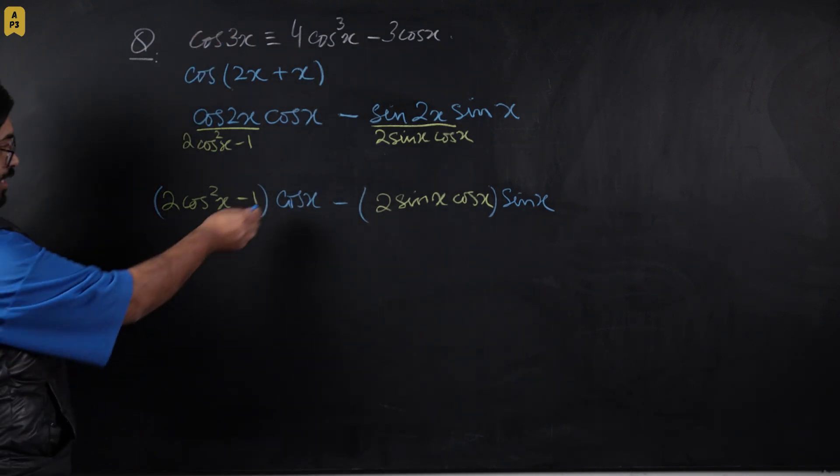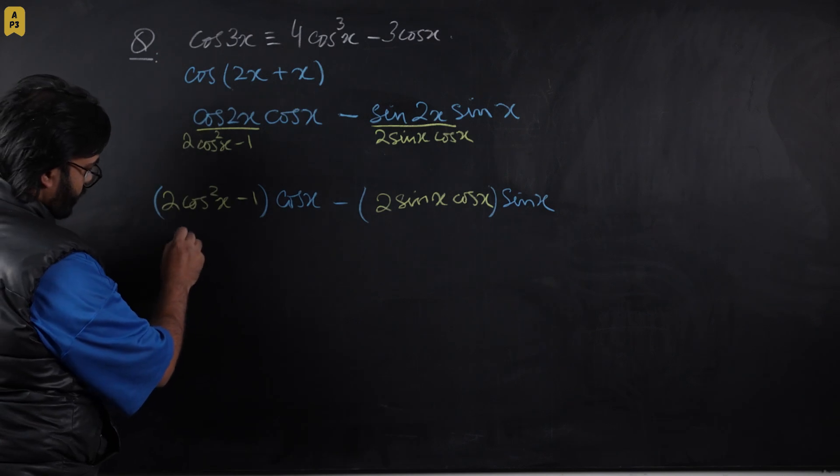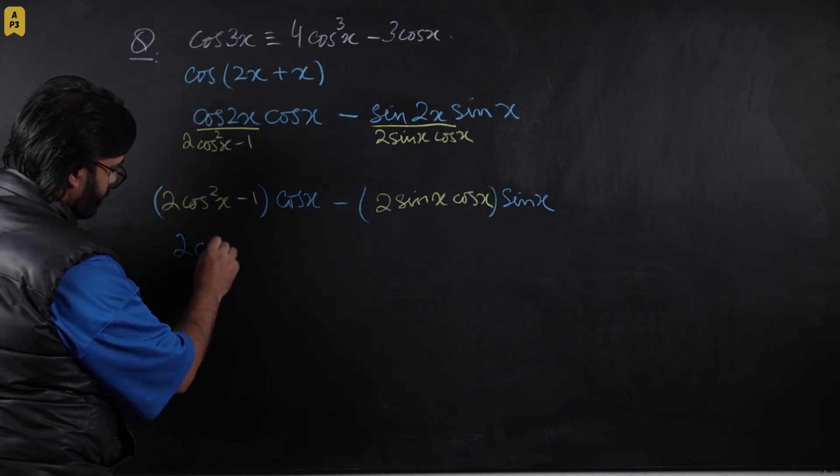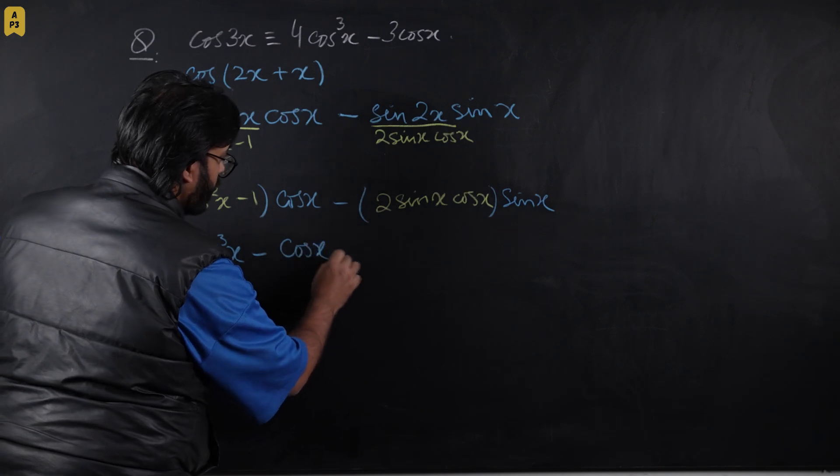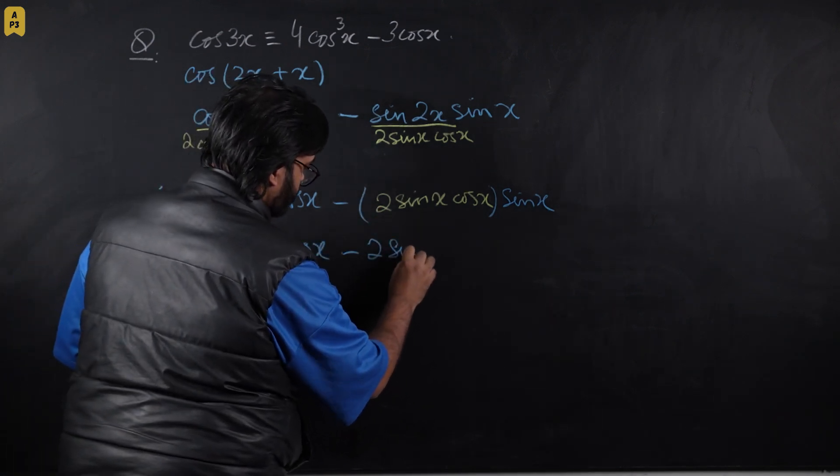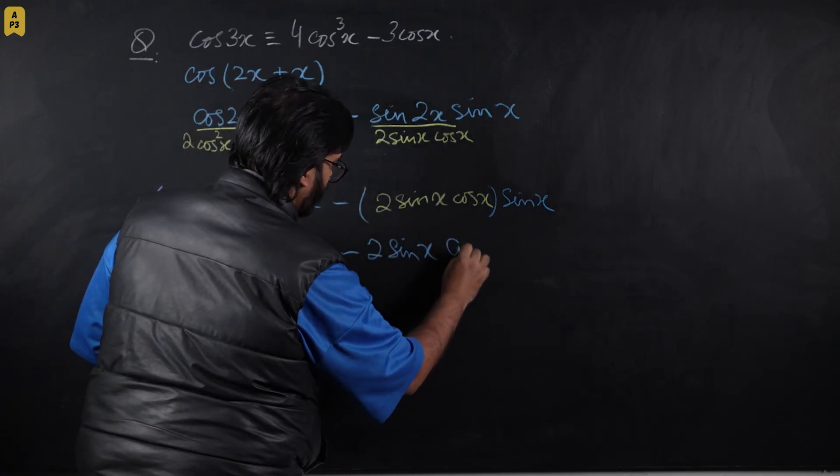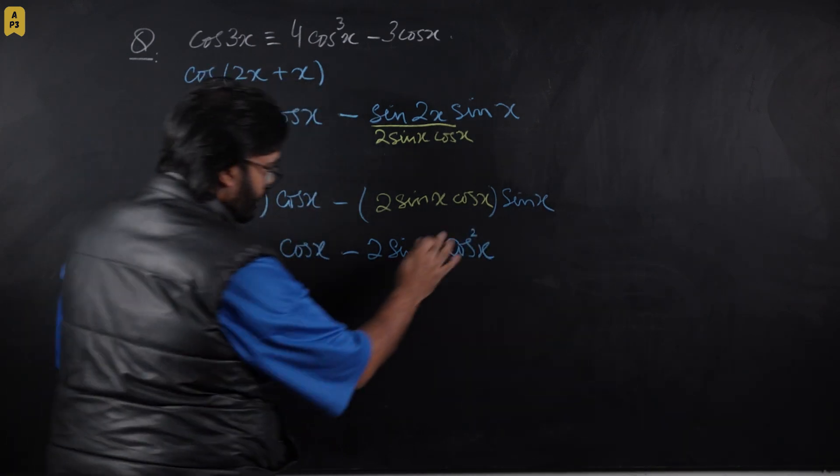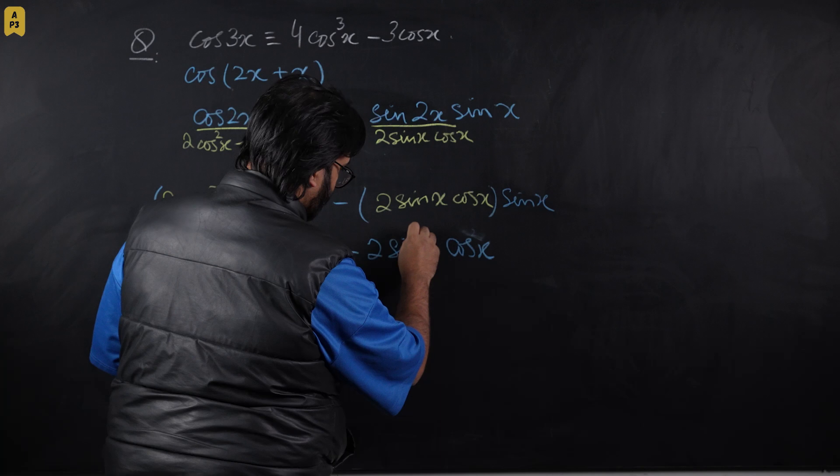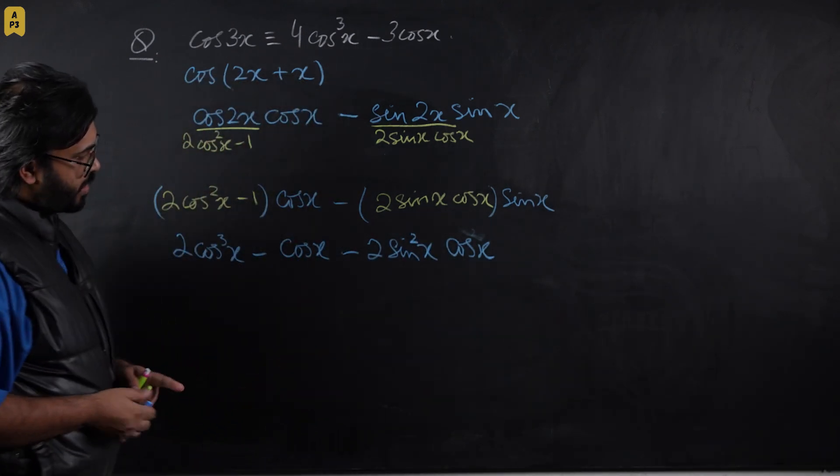Let's multiply these cosines inside. This becomes 2cos³x - cos x - 2sin²x cos x.